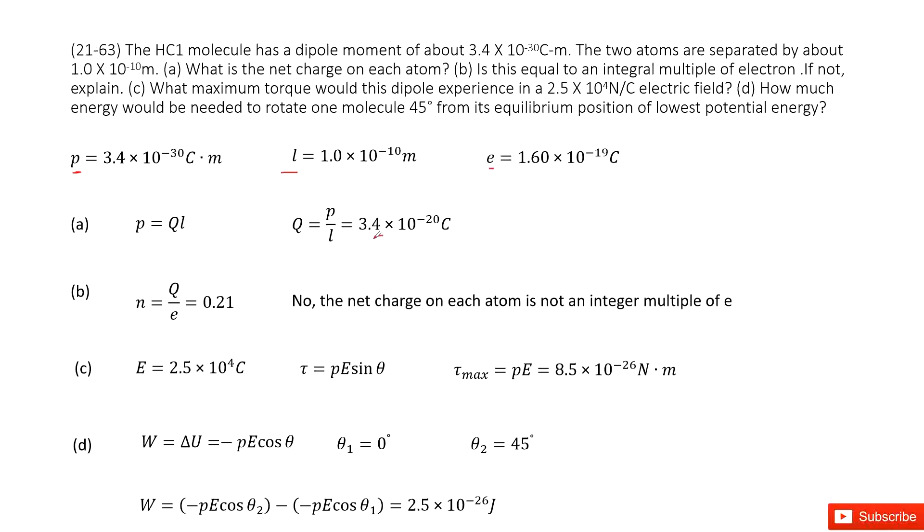The next one asks if this is equal to an integral multiple of electrons. This is the charge these two atoms carry. We know the electron carries one negative fundamental charge, and we can write the absolute value for the charge carried by electron. To check if this is an integral multiple, we use the total charge q divided by fundamental charge, and we find that this is not integral.